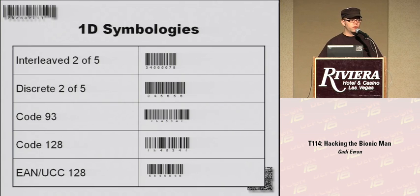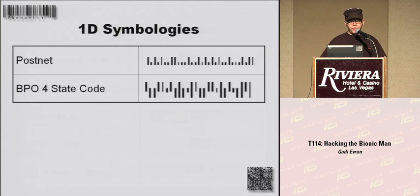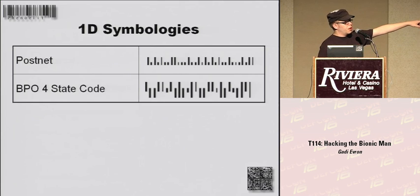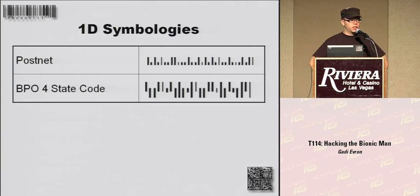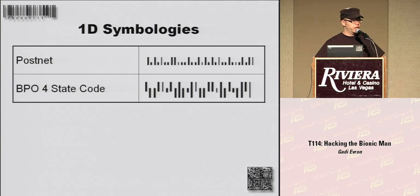Symbologies differ mostly in error correction and in what resolution you can print them in. It's really like protocols — everyone invents their own. There are also weird barcodes like the PostNet barcode you've probably seen on envelopes — that's actually routing information for letters. The British, always being their separatist island folks, had to invent their own postal barcode that roughly looks the same but is the British one.